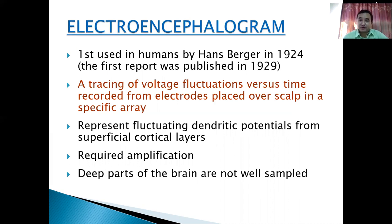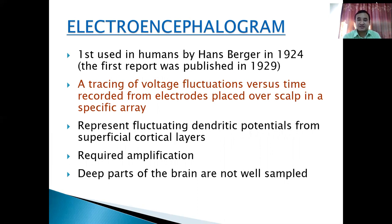Electroencephalogram (EEG) measures the electrical activity of the brain. In case of seizure activity, we see spikes, wave and sharp wave patterns in the EEG. However, EEG is only 50% sensitive. If you do the EEG within 24 hours of seizure activity, there is a higher chance of detecting abnormality. The take-home message is: even if EEG is normal, the patient might be suffering from seizure disorder. Do not rely wholly on the EEG report to diagnose seizure disorder.